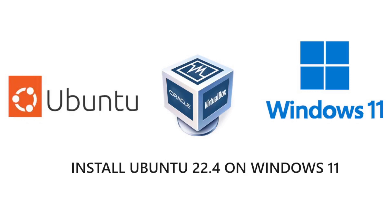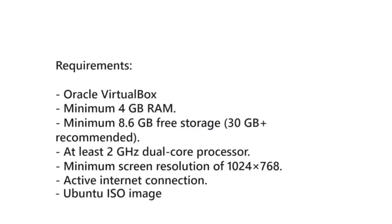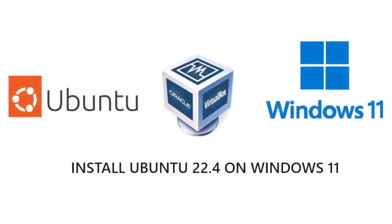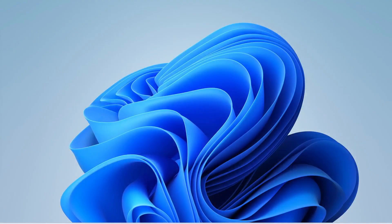Welcome back folks. In today's video we are going to be installing Ubuntu 22.04 on our Windows machine. Our requirements will be Oracle VirtualBox for virtualization, a minimum of 4 gigabytes RAM, a minimum of 8 gigabytes free storage, at least a two-core processor, an active internet connection, and of course the Ubuntu ISO image. So let's get started.